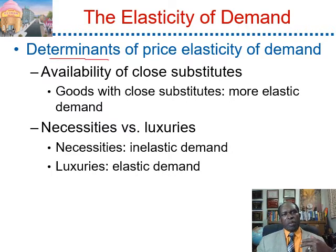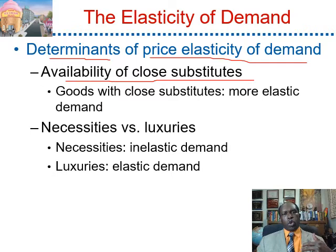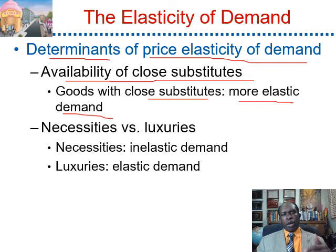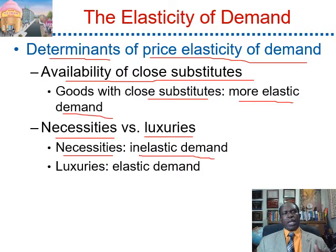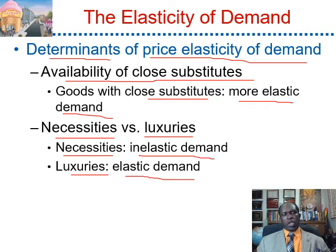The determinants of price elasticity depend on availability of close substitutes. Goods with close substitutes tend to have more elastic demand — for instance, laundry detergent or clothing. Also, necessity goods versus luxury goods: necessity goods tend to have inelastic demand, while luxury goods tend to have elastic demand. For instance, the demand for food, which is a necessity good, will have inelastic demand, while the demand for vacation to Disney World or to Paris will have elastic demand.